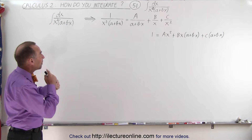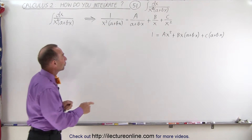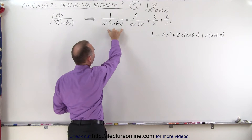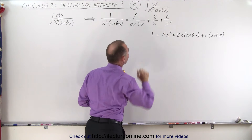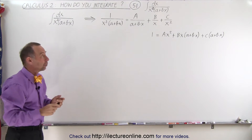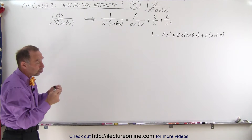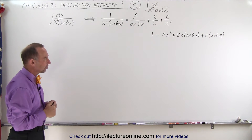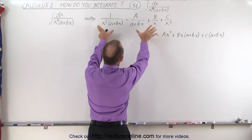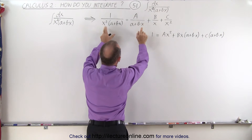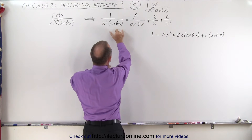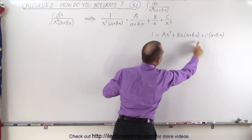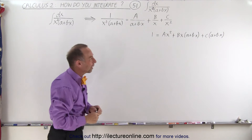So instead, we may try to use partial fractions. What we're going to do is take this quantity — 1 over x squared times (a plus bx) — and write it as the sum of three fractions. When we solve for A, B, and C, we should be able to come up with something we can actually integrate — three separate integrals. So we multiply both sides of the equation by the common denominator x squared times (a plus bx). On the left we get 1, and on the right we get this expression.